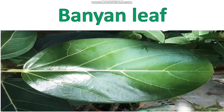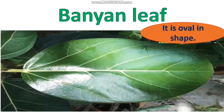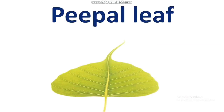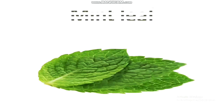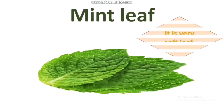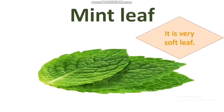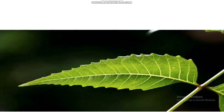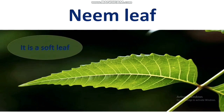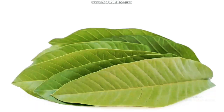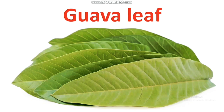This is banyan leaf — it is oval in shape. Peeple leaf — its leaf apex is elongated. This is mint leaf — it is a very soft leaf. Next, guava leaf.